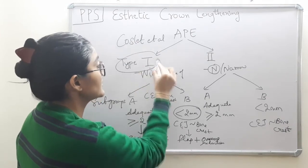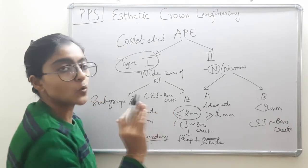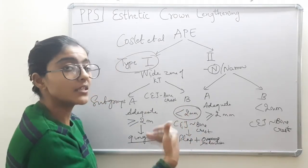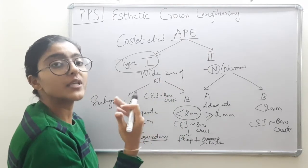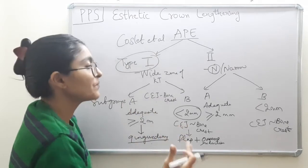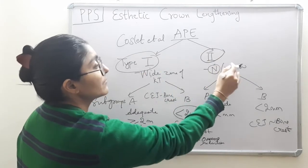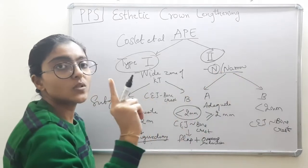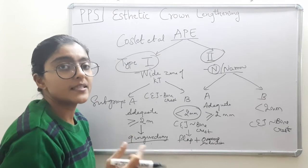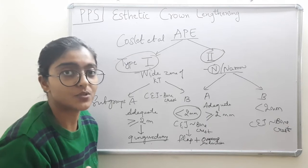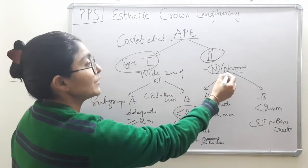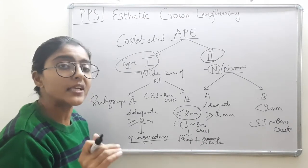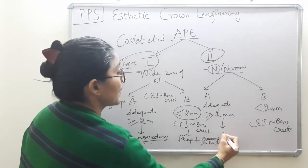So type 1 treatment summary: if there is adequate distance between CEJ and bone, perform gingivectomy (soft tissue manipulation only); if the distance is inadequate, we must perform both soft tissue and hard tissue manipulation. In type 2, where there is normal or narrow width of keratinized gingiva, the surgical flap technique of choice is the apically repositioned flap (APF), which has the added advantage of increasing the width of attached gingiva.